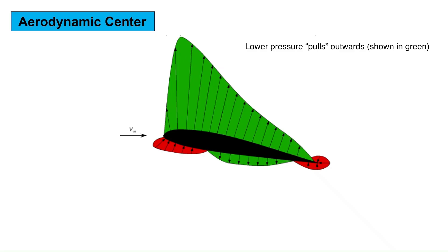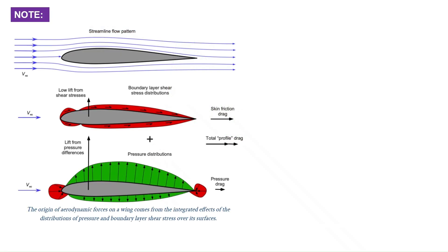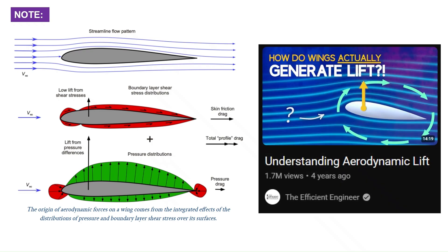The differences in the pressure distribution between the upper and lower surfaces primarily contribute to the lift force. Actually, the shear stress distribution and pressure distribution together give us the total aerodynamic force, but for simplicity we will stick to the lift force component here. You can watch this video by the efficient engineer for a more in-depth representation.